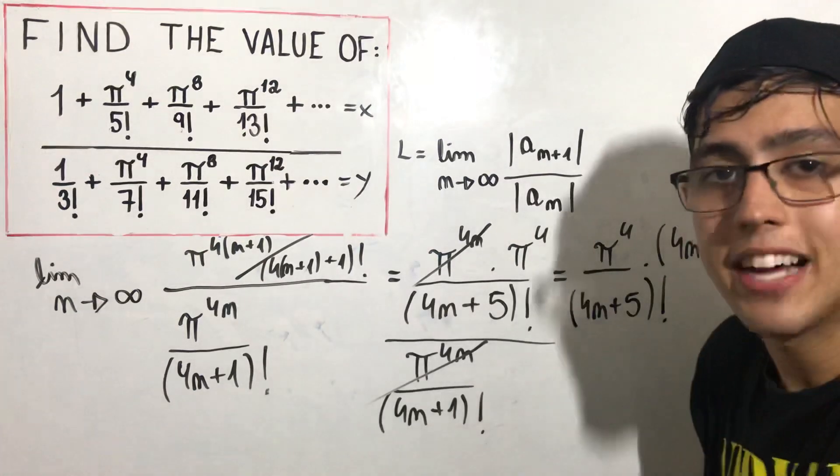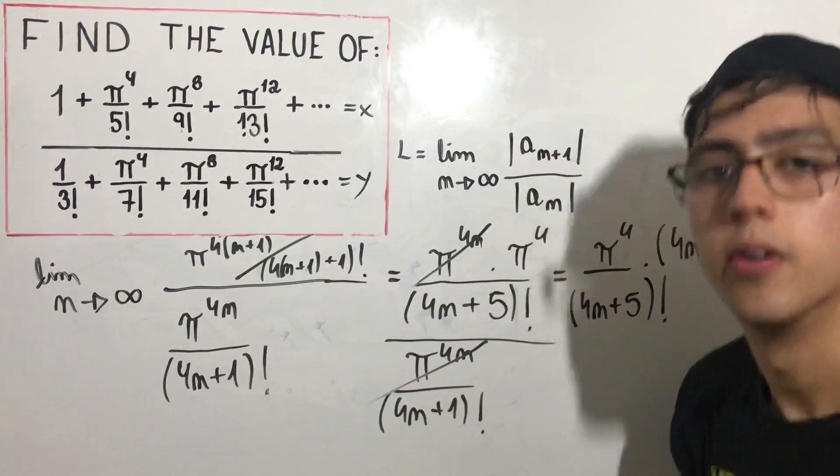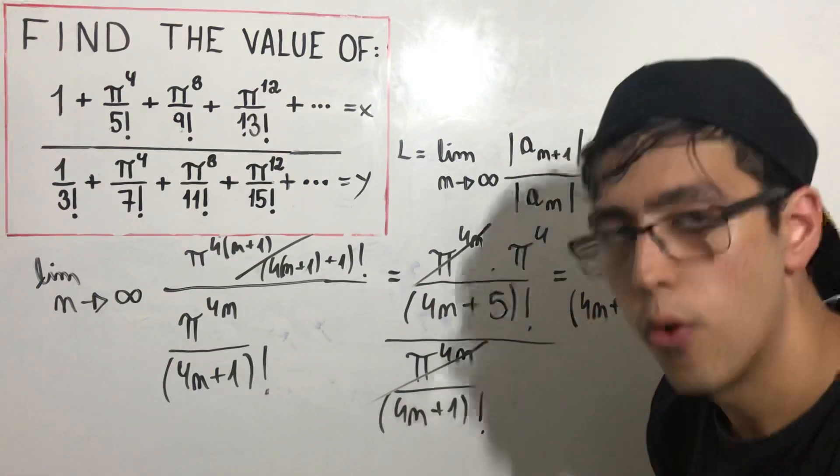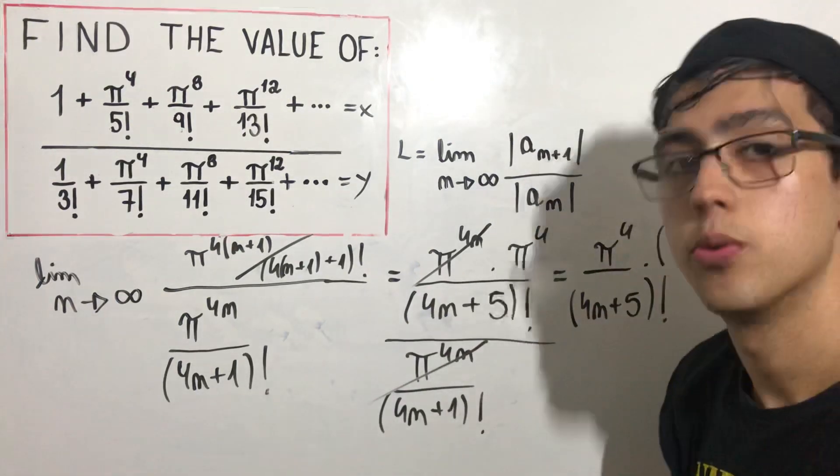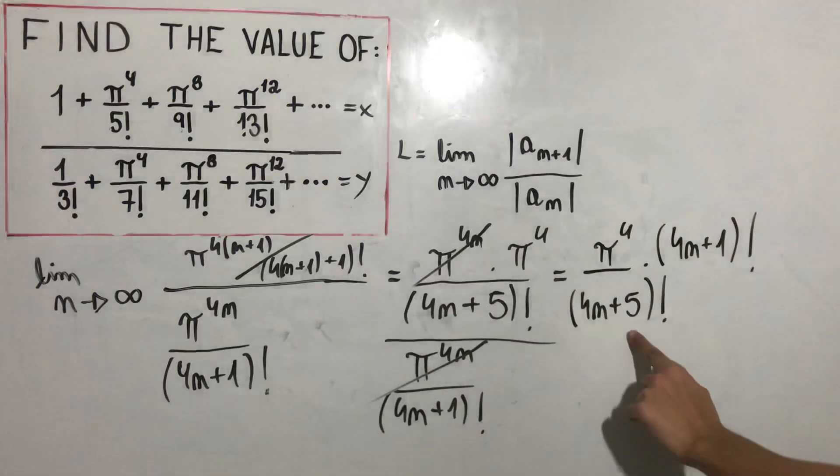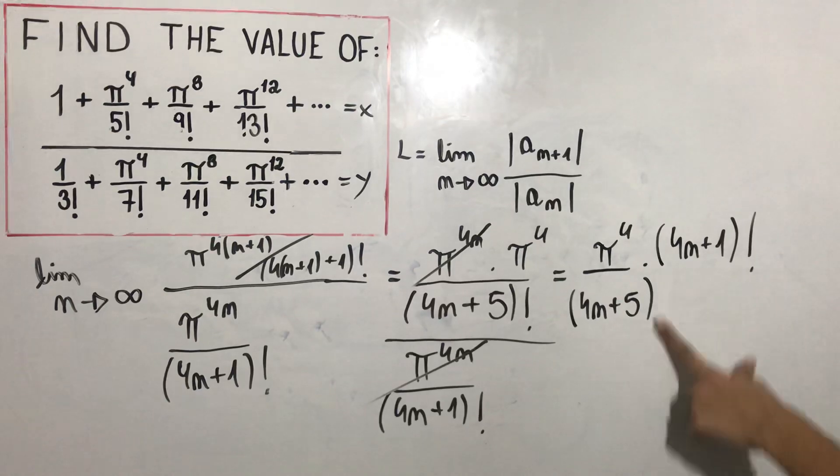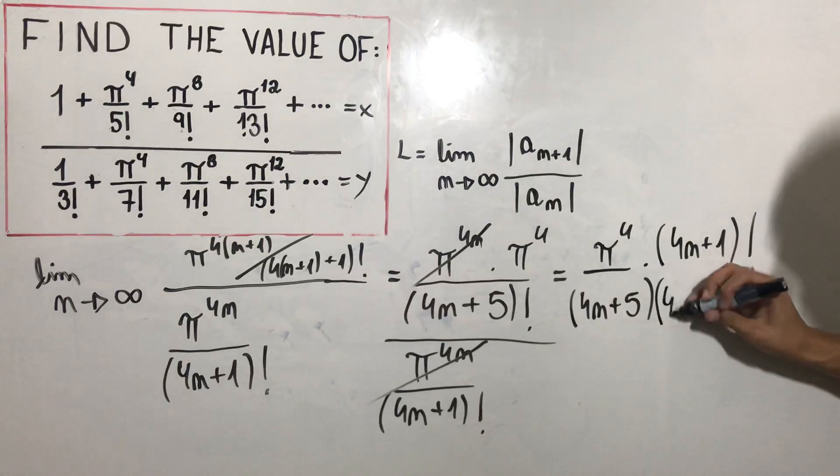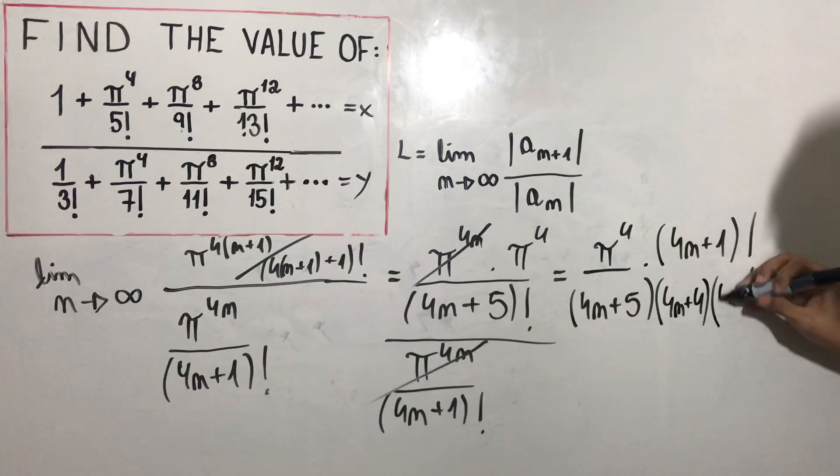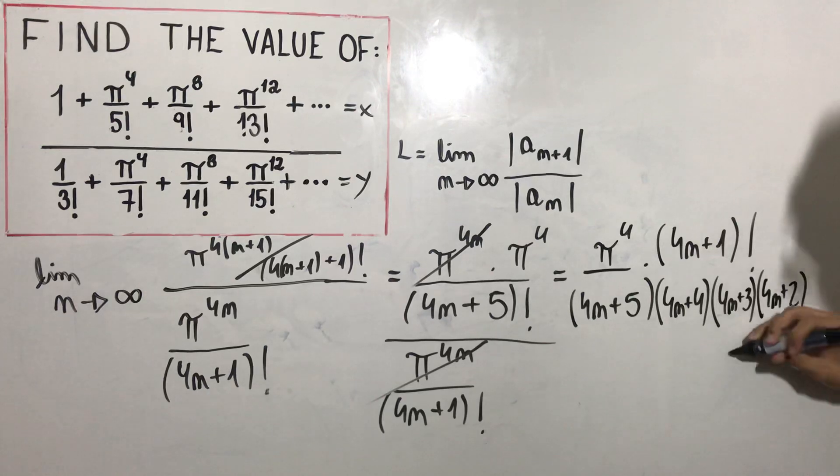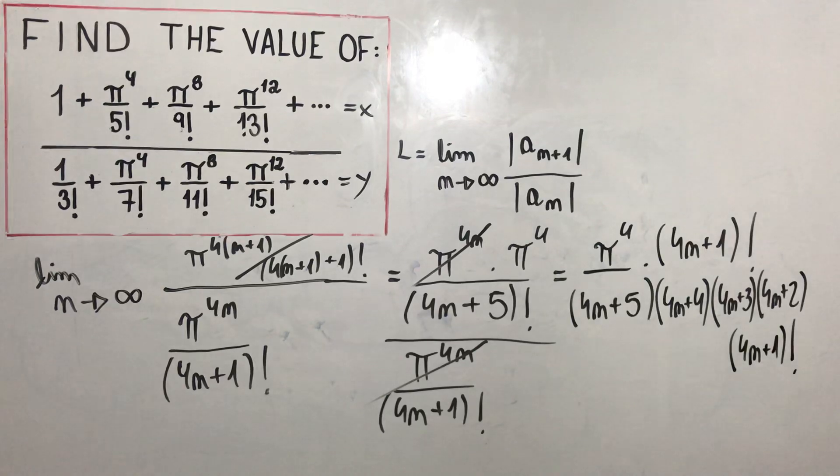But what is the definition of factorial? For example, 5 factorial: 5 times 4 times 3 times 2 times 1. So (4n+5)! equals (4n+5) times (4n+4) times (4n+3) times (4n+2) times (4n+1)!. So we can trim these things.